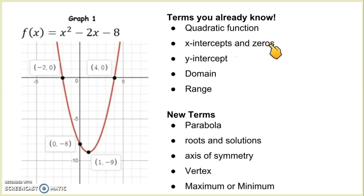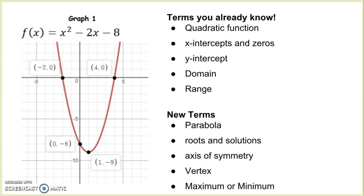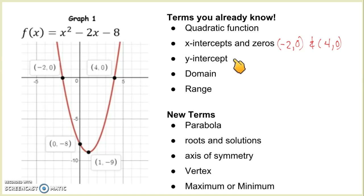The x-intercepts and the zeros are the same thing — that's where the graph crosses the x-axis. So my x-intercepts and zeros are going to be negative 2, 0 and also 4, 0. The y-intercept is where the graph crosses the y-axis, so 0, negative 8 would be my y-intercept.